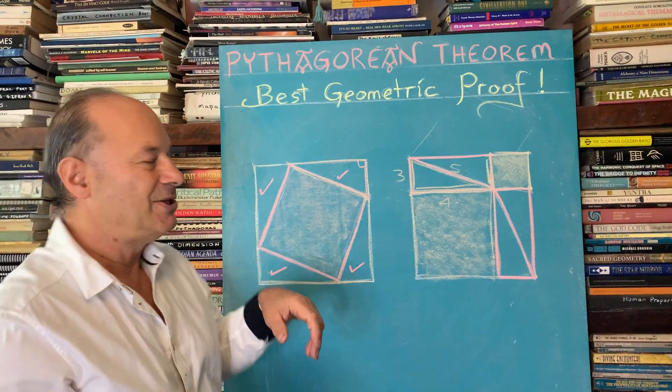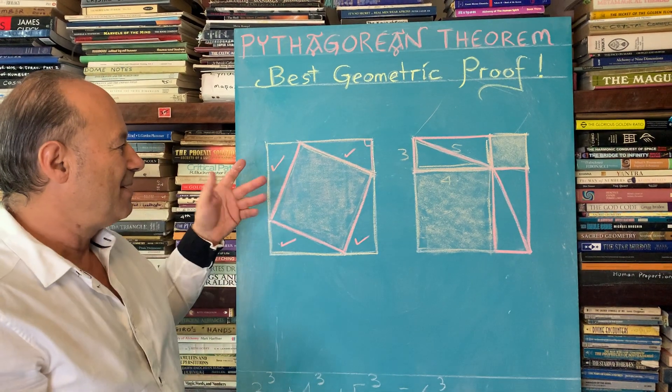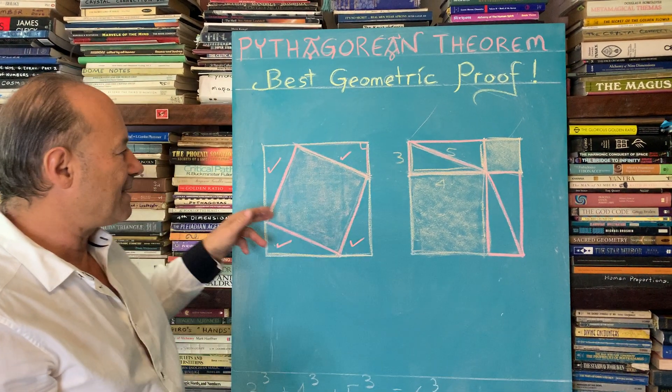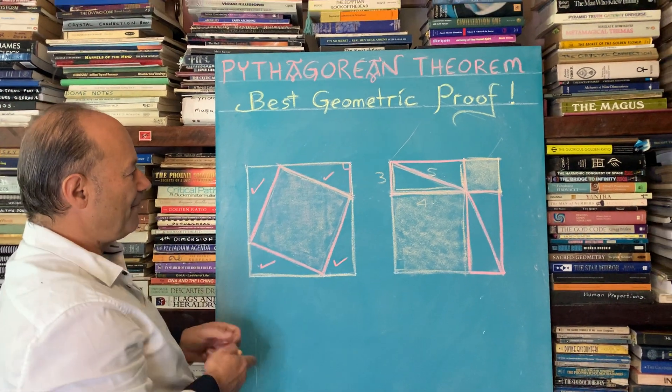So this is an amazing simple geometric proof that doesn't need any numbers. It just shows by mere cardboard cutouts, we can pick up all the pieces.